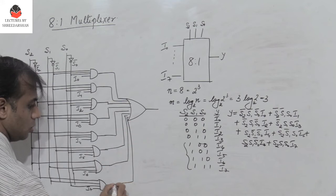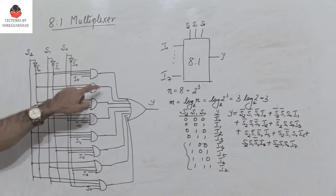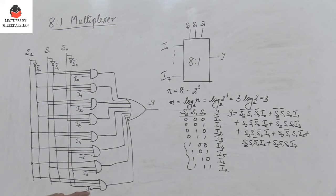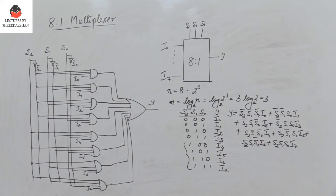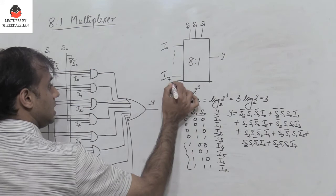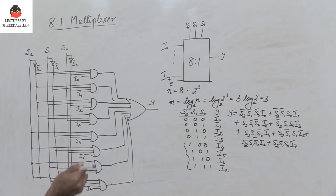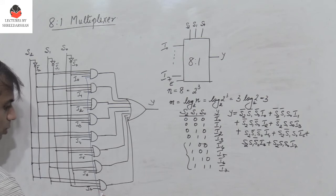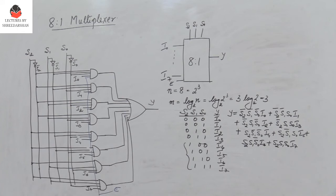Apart from this, we can also include an enable input E. This enable can be another input to all the AND gates — a common input. If E is 0, then the MUX is disabled. If E is 1, the MUX is enabled. We can include E and that is optional; it depends on the requirement.